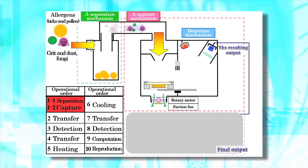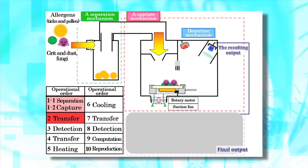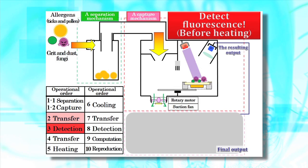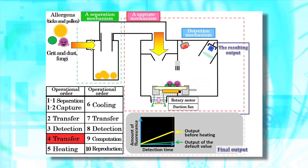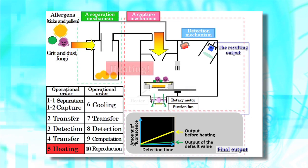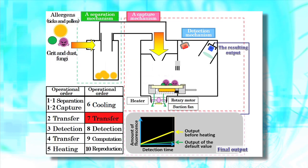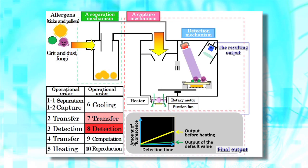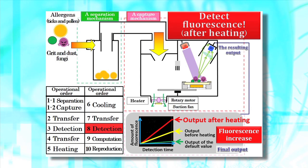Secondly, the separated particles are charged with static electricity and absorbed to the capture plate as a test section. After they're captured, they are irradiated with a blue laser, and the amount of fluorescence is measured before the Maillard reaction. Next, they're heat treated, and the amount of fluorescence is measured again after the Maillard reaction creates and increases the quantity of the fluorescent microbes.